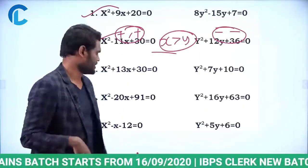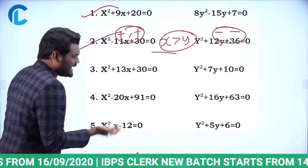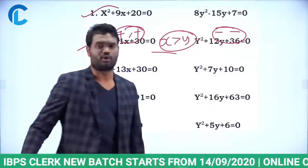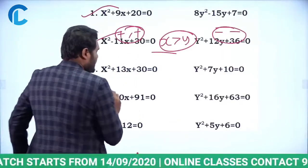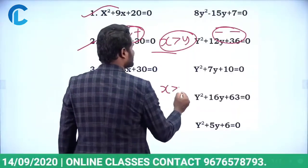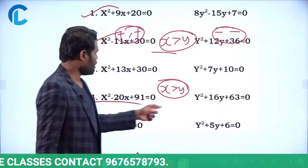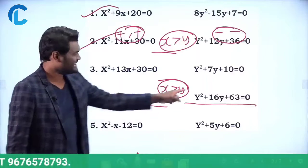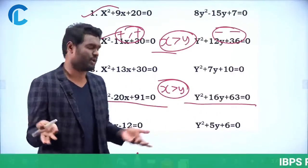Let us look at the next one: x² - 20x + 91 = 0 and y² + 16y + 63 = 0. Even this question can be answered in just a fraction of seconds. The x roots are positive and the y roots are negative, which means the answer is x greater than y. Because this has positive roots and this has negative roots, directly I can say the answer is x greater than y.